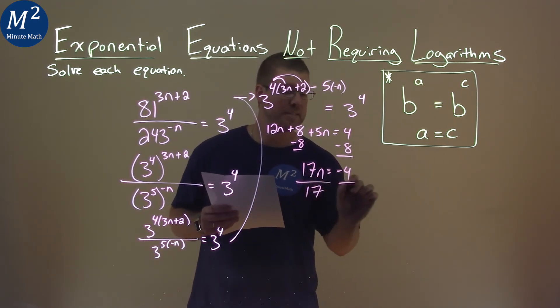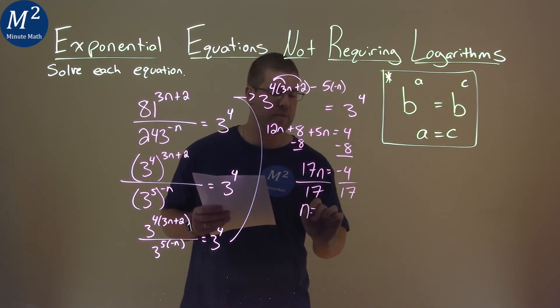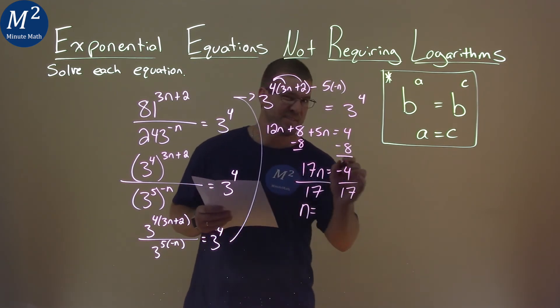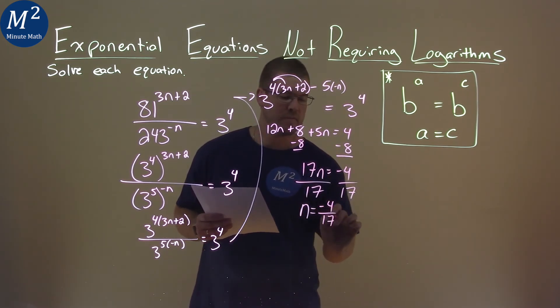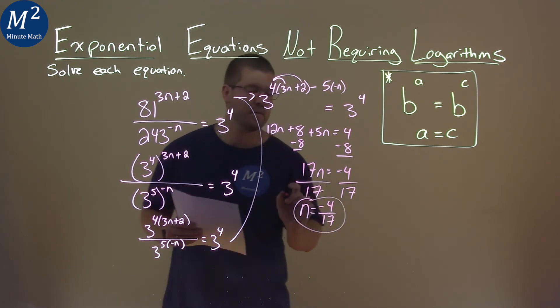I divide both sides by 17, and n is now completely by itself, and this doesn't simplify anymore. So we have negative 4 over 17, and that is our final answer.